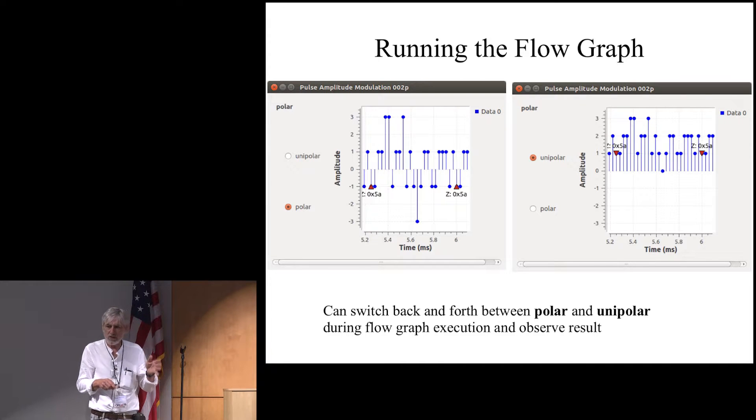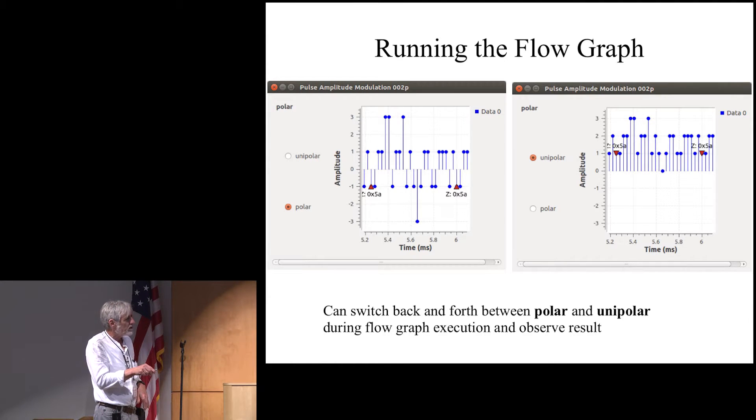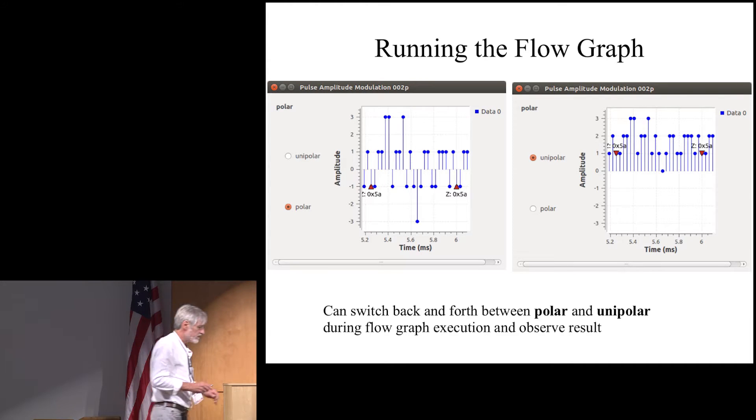So we transmit for each of those discrete time symbols, we transmit two bits. If it's unipolar, then we only have positive values, zero, one, two and three. And we can choose that on the fly by using the radio buttons here that are programmed or that are specified here in the QT GUI chooser.